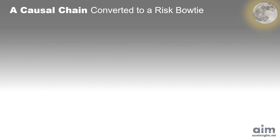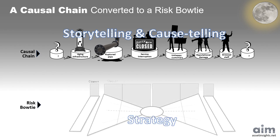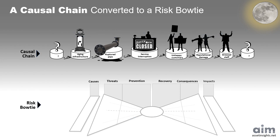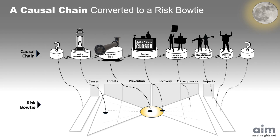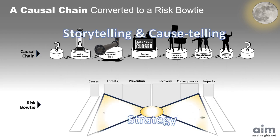Causal chains help us understand the story. Risk bowties help us manage it. Mapping the chain is just the beginning — the real power comes in knowing where and how to intervene. Take the example of a ruptured pipe: to the left, threats like aging infrastructure; to the right, fallout such as service disruption, unhappy customers, and internal strain. By overlaying the causal chain onto a bowtie, we shift from storytelling to strategy, highlighting the precise points where prevention and mitigation make the biggest impact. In our next video, we explore how risk bowties build on causal chains to manage threats before and after the tipping point.